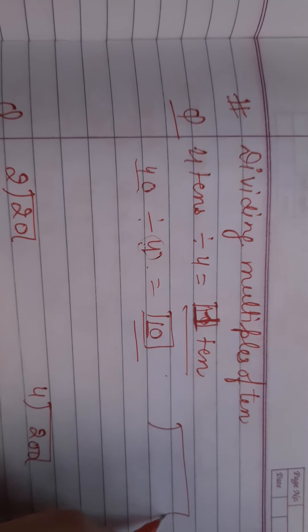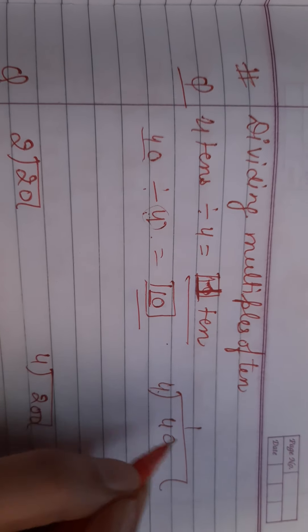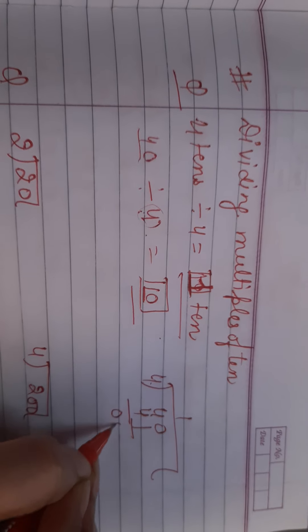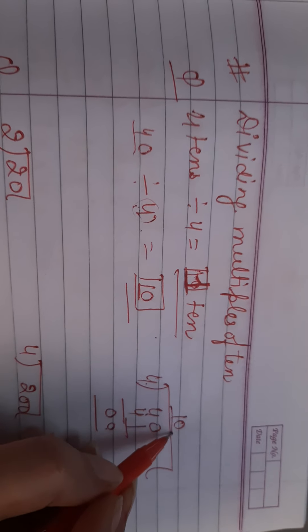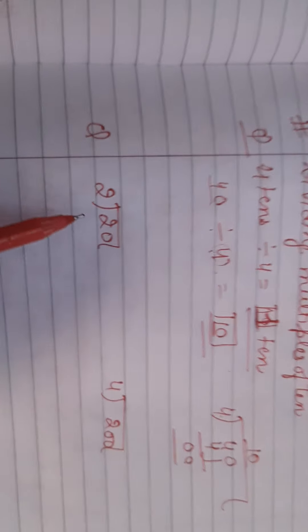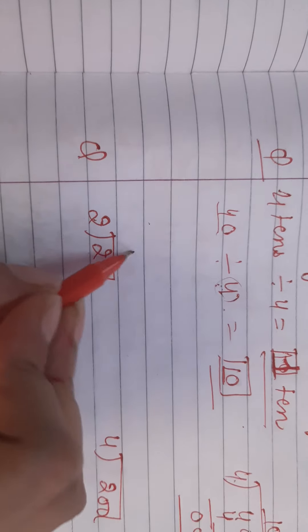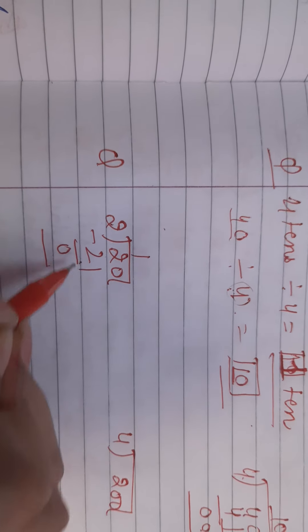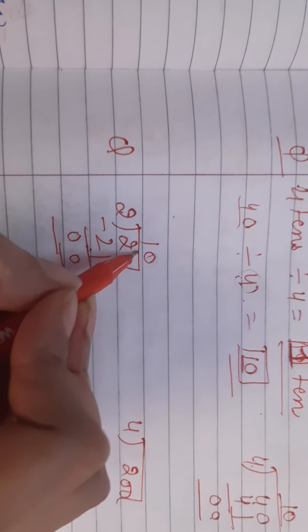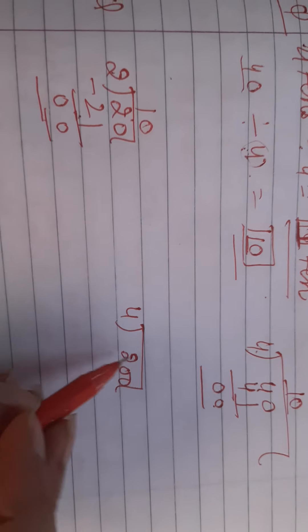So we can divide it like this: 40 divided by 4. 4 ones are 4, and this 0 will go there. So our answer will be 10. Now for the next question, we have to divide 20 divided by 2. 2 ones are 2, and this 0 will go there. So our answer will be 10.